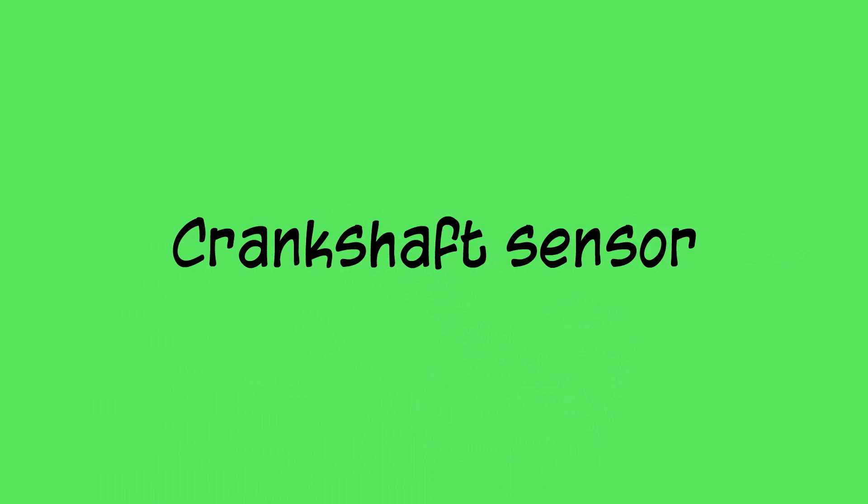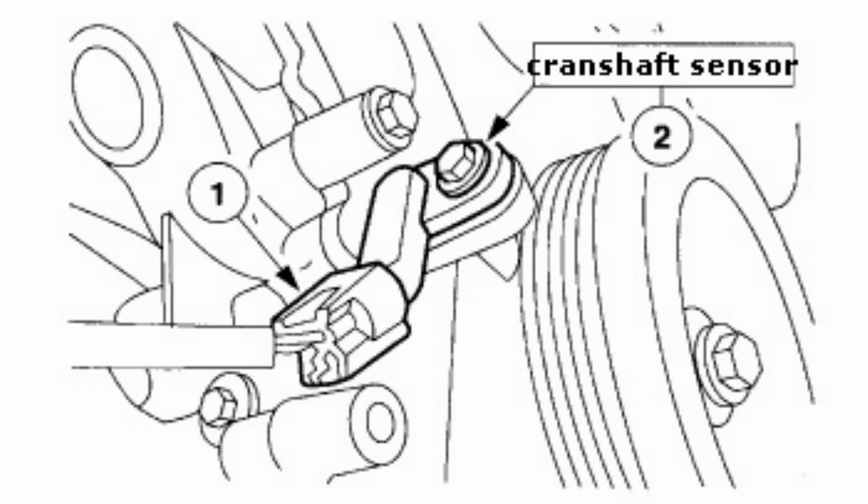Crankshaft sensor. It is used to monitor the position and rotational speed of the crankshaft, and this information will be used by the EMS to control the ignition system timing and other engine parameters.